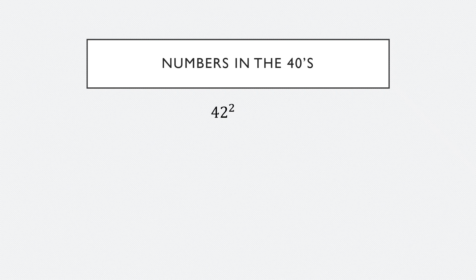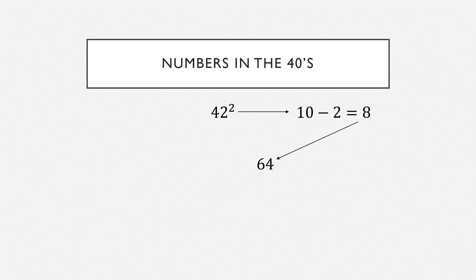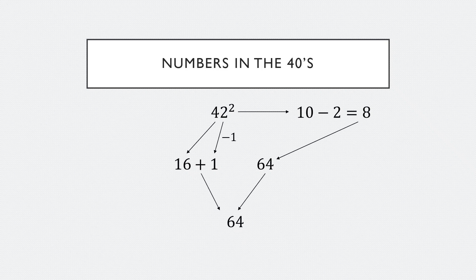There's a slight difference here. Instead of squaring 2 directly, we'll subtract 2 from 10, which gives us 8. And it's 8 we'll square — so you square 8, you get 64. For the last digit, we subtract it from 10 and square the result. Once again, we take the first digit and square it — that's 16. Now, instead of adding the last digit directly, we subtract 1 from it first before we add it. So, the last two digits will be 64, and the first two will be 17. So, the square of 42 is 1764.